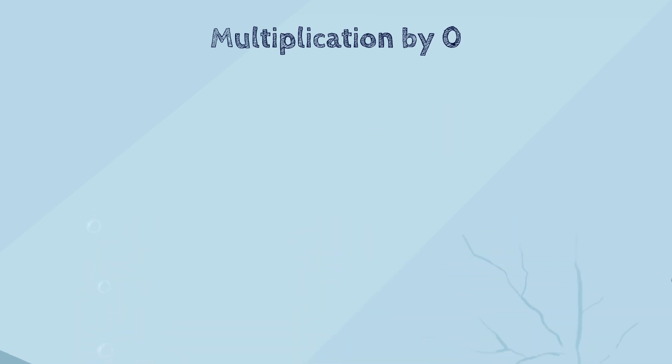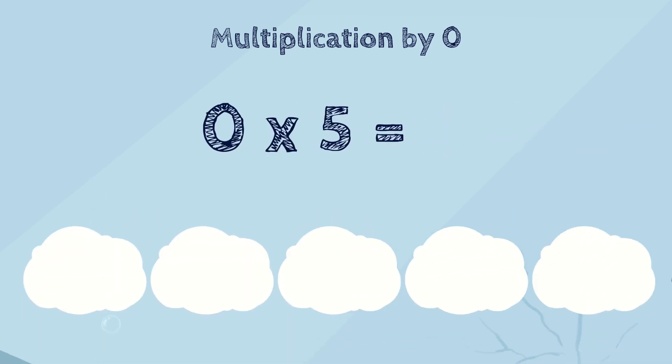And what if we multiply zero by five? It's still nothing! Yes! No matter how many times we add nothing, the answer is always nothing. So, if zero is multiplied by any number, the answer is always zero.